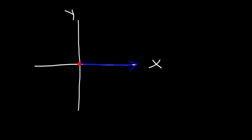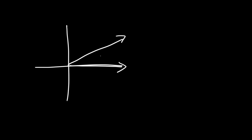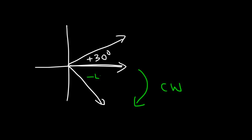If the terminal side is above the x-axis — if we rotate from the initial side to the terminal side in the counterclockwise direction — then the angle is going to be positive. If we rotate in the clockwise direction to go from the initial side to the terminal side, then the angle is negative. For example, an angle of 30 degrees would be positive 30 degrees. An angle of negative 45 would require traveling in the clockwise direction, giving us negative 45 degrees.